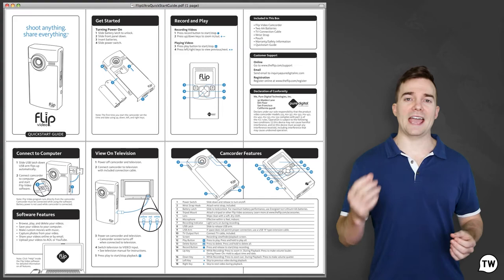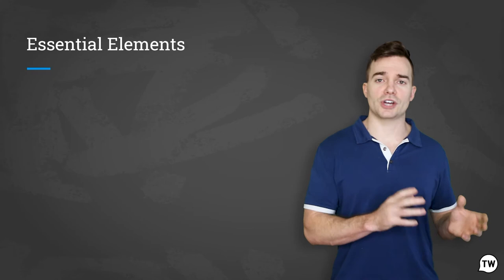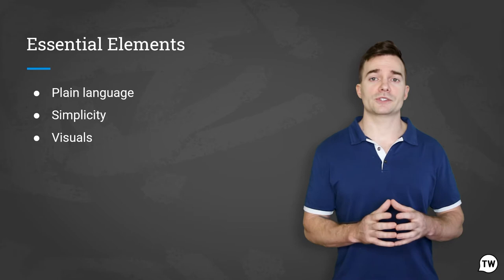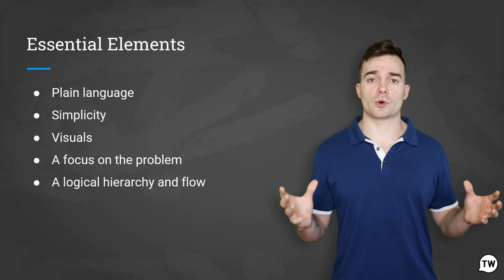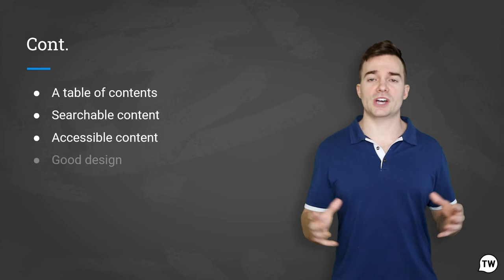Now let's talk about essential elements in user documentation. They are: plain language, simplicity, visuals, a focus on the problem, a logical hierarchy and flow, a table of contents, searchable content, accessible content, good design, feedback from real users, and links to further resources.